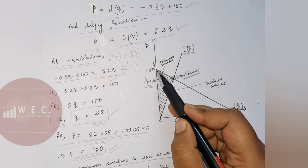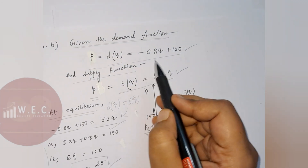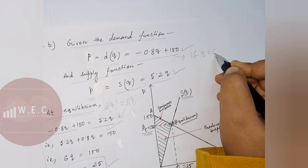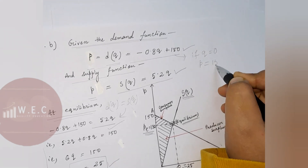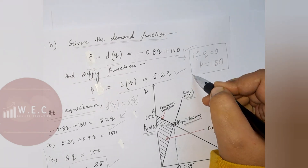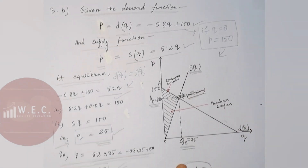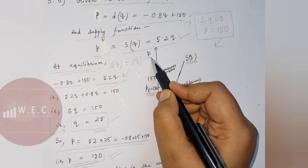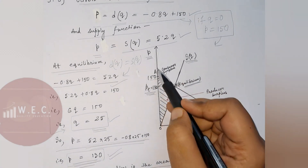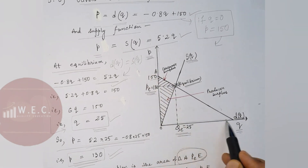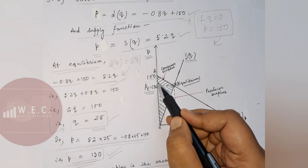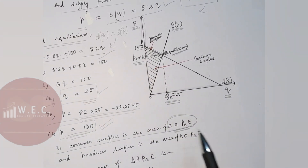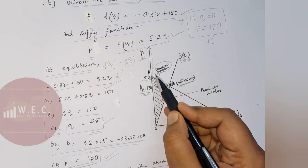You can see here that the horizontal axis is the quantity axis and the vertical axis is the price axis. The intercept of the demand function on the price axis is 150. The area above the equilibrium price and below the demand function is consumer surplus — that is, the area of triangle ApeE.